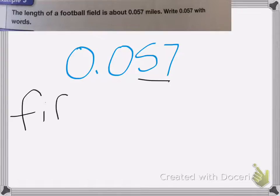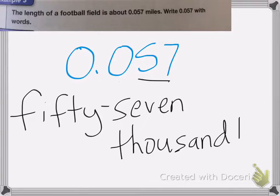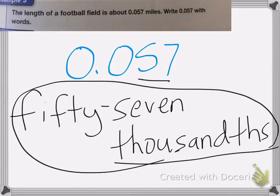Fifty-seven and then the place value afterwards, thousandths. Don't forget that THS because that tells us it's after the decimal point. That is how you write it in words.